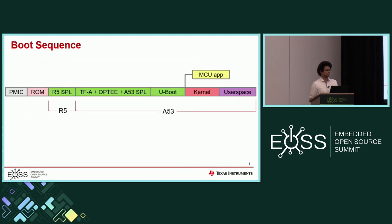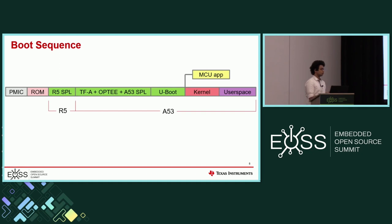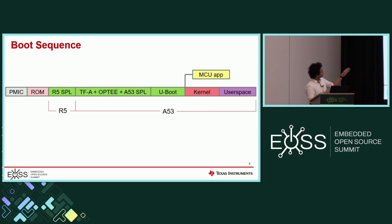The typical boot sequence: once you turn on the power, your PMIC is up. The PMIC powers the SOC, then you jump to ROM, and then you go into your bootloader. In our case, one stage runs in the R5 core and the rest will be running on the A53 core. Once you hit U-boot, that's when we can start all our heterogeneous applications. Then finally the kernel, and then the user space.